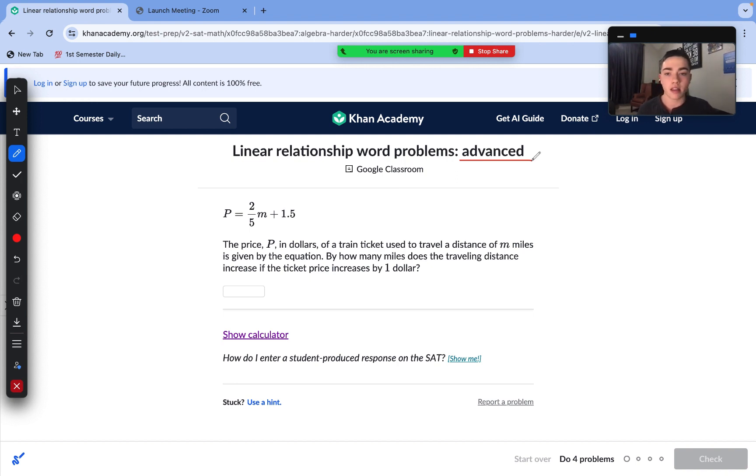Make sure to subscribe and let's get started. The price P in dollars of a train ticket used to travel a distance of M miles is given by the equation. How many miles does the traveling distance increase if the ticket price increases by one dollar?